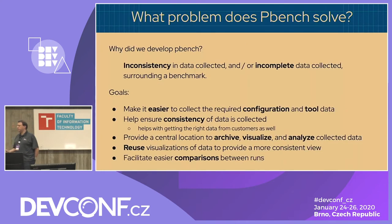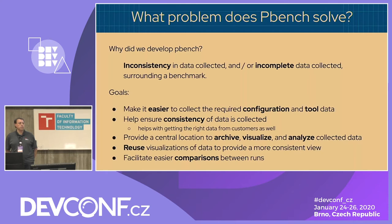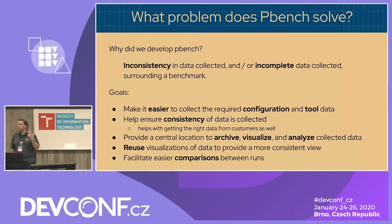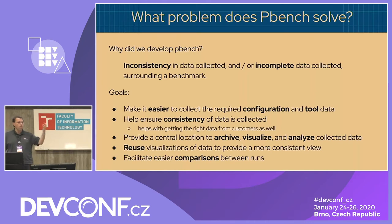What problem does this solve? We found there's a certain level of inconsistency in the data that gets collected and incomplete sets of data surrounding a benchmark. We've had a team working on distributed systems for a while, and in running and collecting data, everybody finds their own way to do it, and you get some inconsistency. Our goal with this tool is to work towards making it easier to capture all the configuration data you need and the tool data you need surrounding your benchmarks, helping make the collection more consistent so you can compare run-to-run or with someone else.